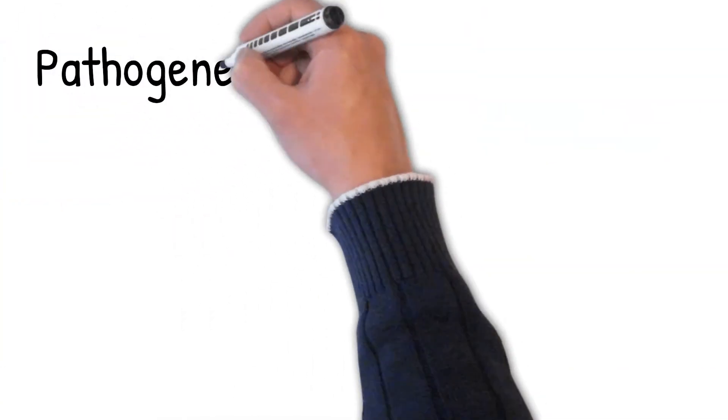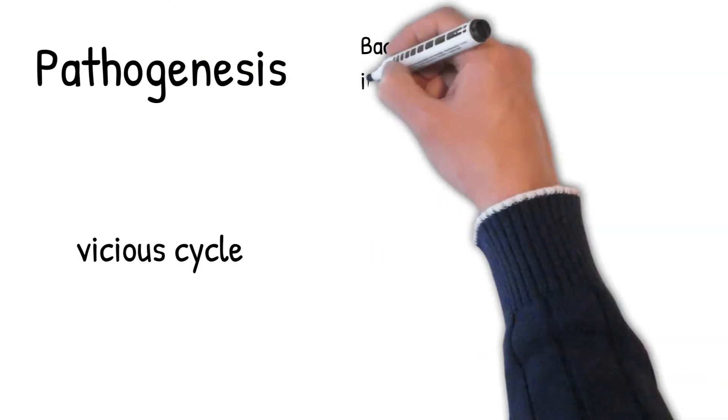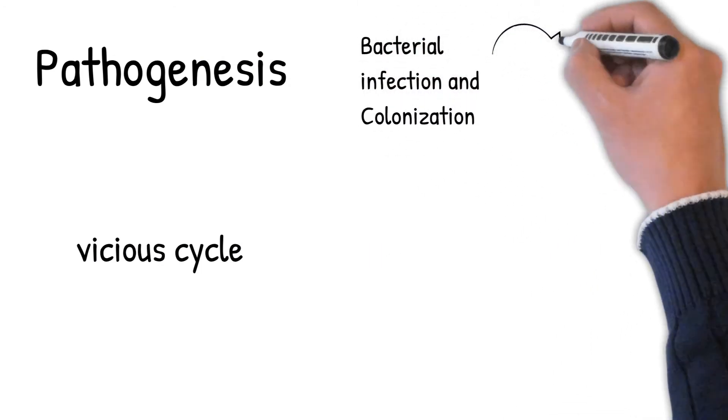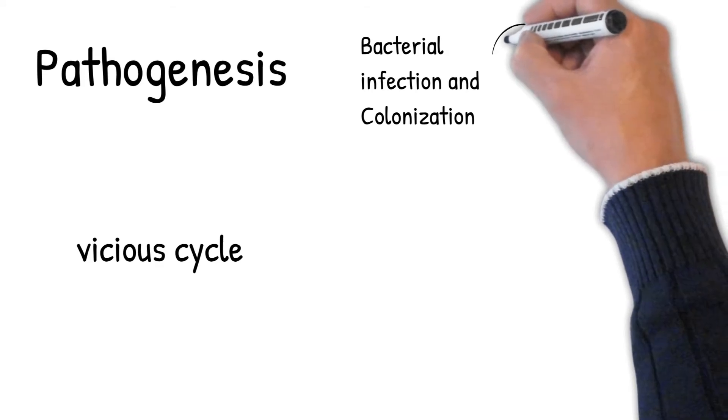Pathogenesis: The development of bronchiectasis requires two factors: an infectious insult and impaired drainage, obstruction, or a defect in host defense.